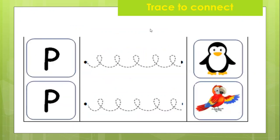Next, P is for penguin. It's a penguin, black and white penguin. I can see yellow beak and yellow feet. Okay, let's trace. Follow the line. Okay. Yes, P is for penguin.